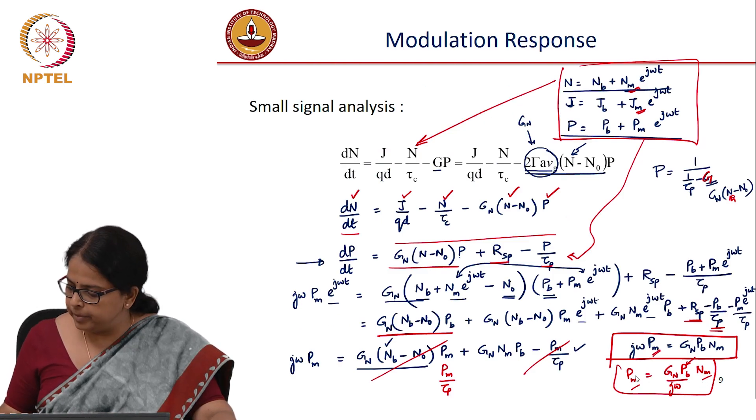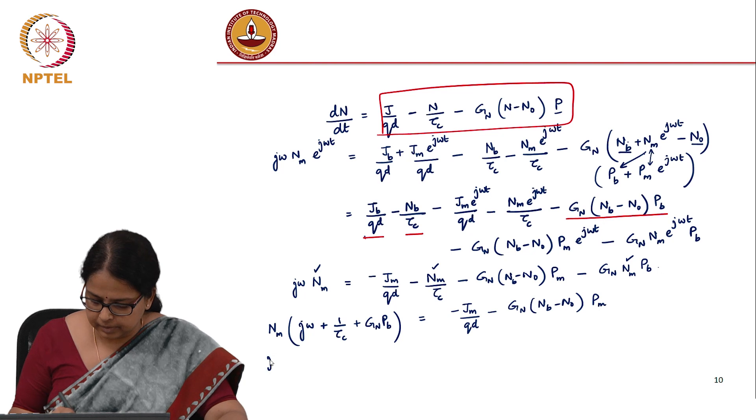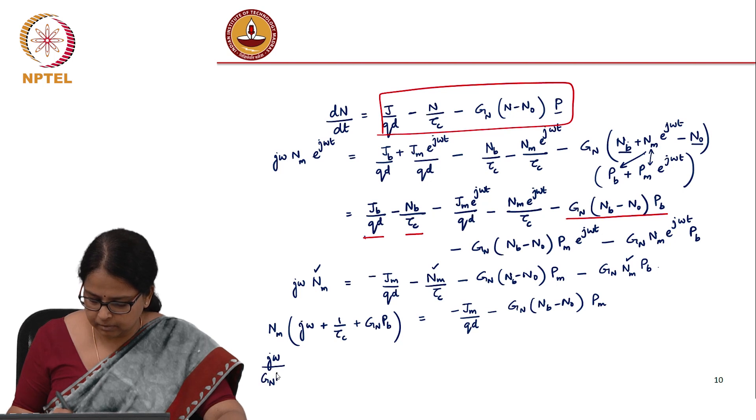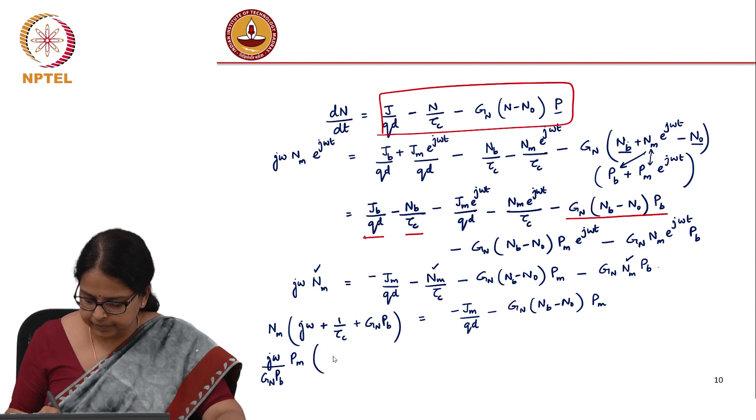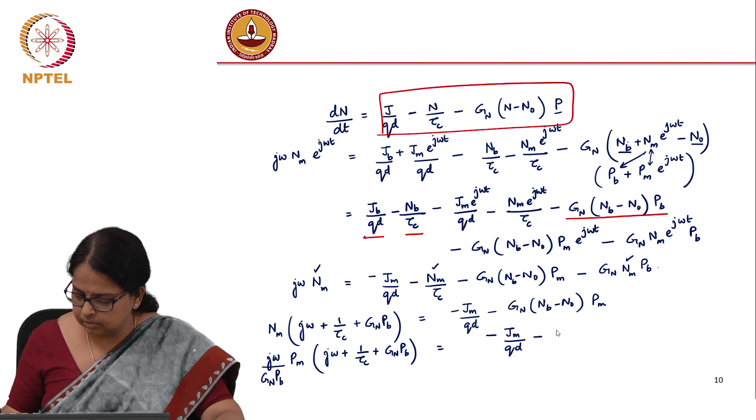I can write it as j*omega/(g_n*p_b) times p_m times (j*omega + 1/tau_c + g_n*p_b).